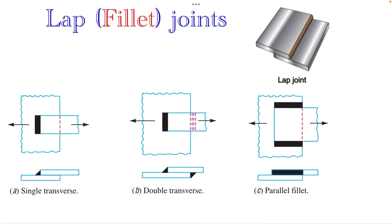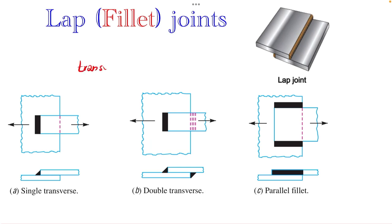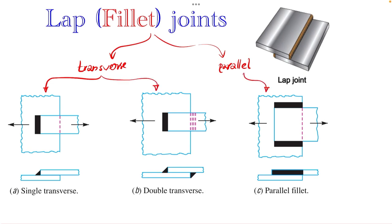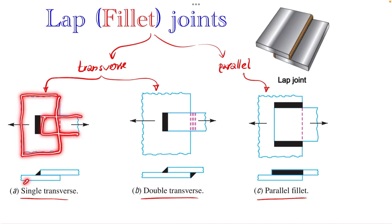Next, we will see the types of lap joint. Lap joint is also known as fillet joint. Here, the plates are overlapping, and if a force is applied the plates will not separate because of the weld provided. The basic classification of the lap or fillet joint is: one is known as transverse fillet and another is known as parallel fillet. The classification is based on the directions of the applied load and the weld line provided.